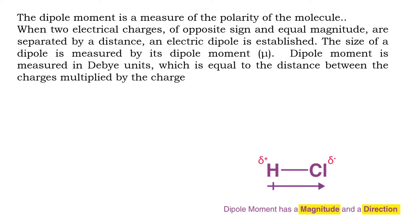When we consider a polar covalent molecule, it has a positive charge and a negative charge — that means there is a charge separation. To measure the polarity of the molecule, we use a term called dipole moment. Dipole moment is a measure of the polarity of the molecule.